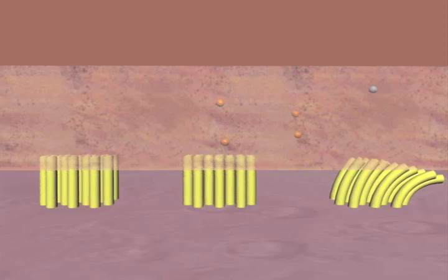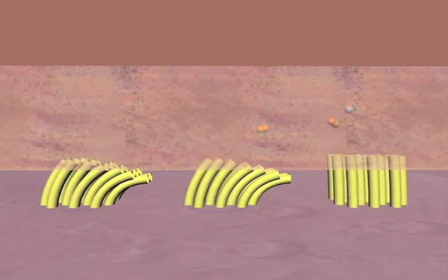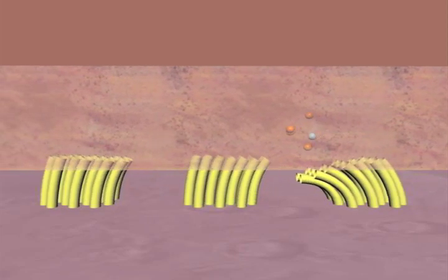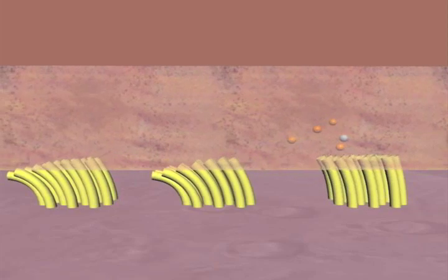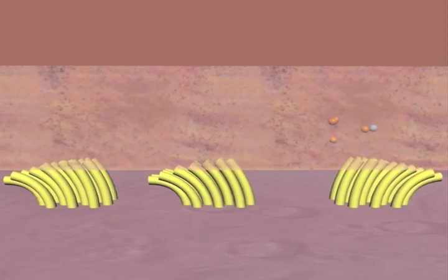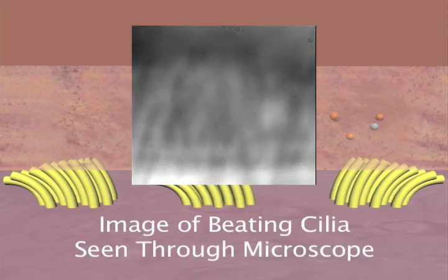But no matter how hard a single cilium beats, the only way it can move mucus is by coordinating with billions of other cilia in the lung. Each cilium is like a football fan in a stadium, and they perform a wave to make the mucus move.